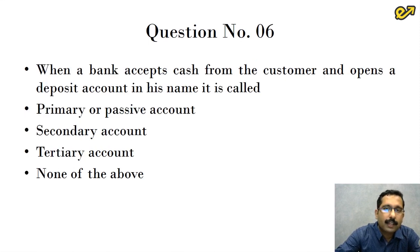Question number six, when a bank accepts cash from the customer and opens a deposit account in his name it is called. For the first time the customer is walking inside the bank branch. He is paying the money and requesting the bank to open an account in his name. So such accounts are called primary accounts. They are also called passive accounts. So the option is the first option.